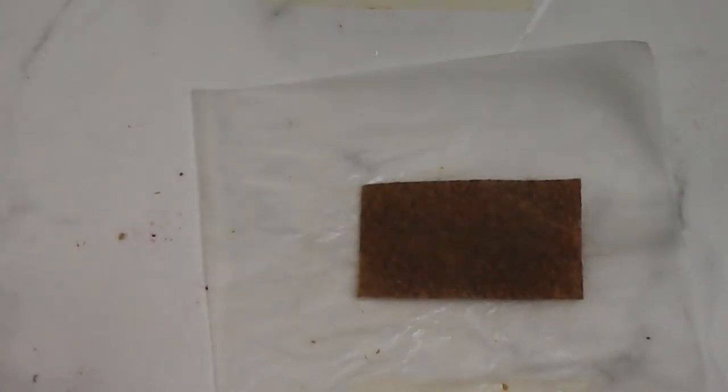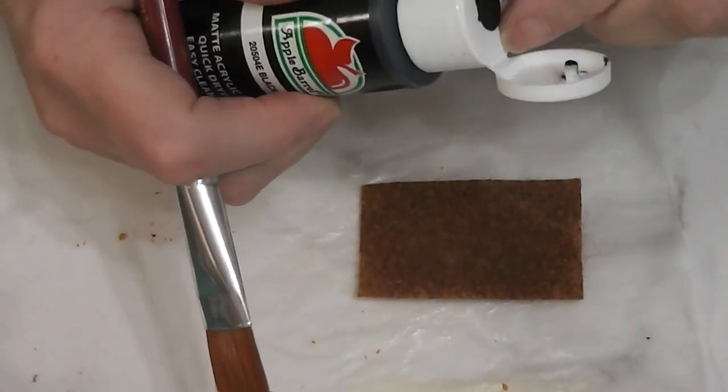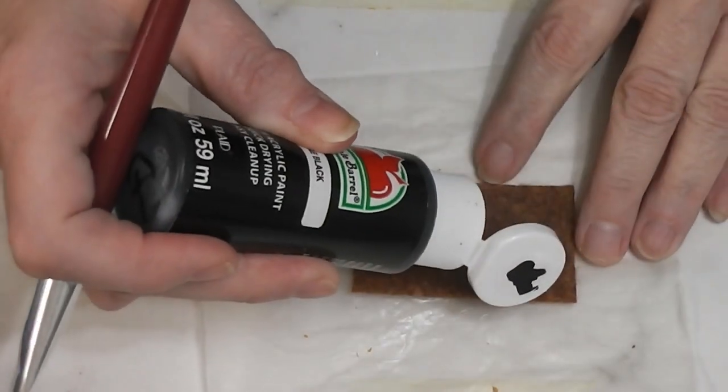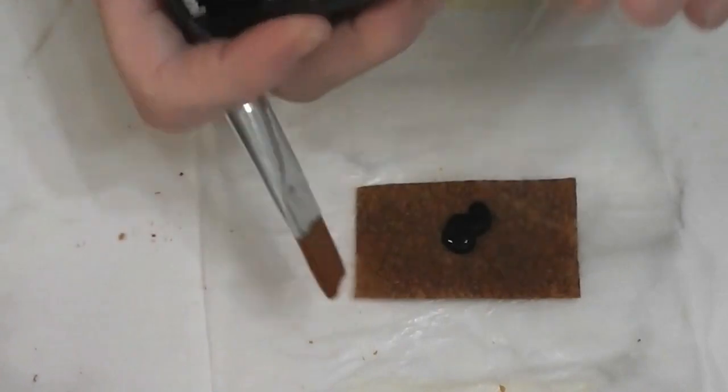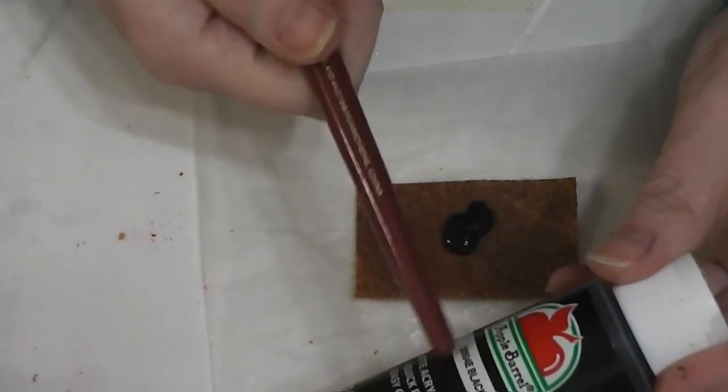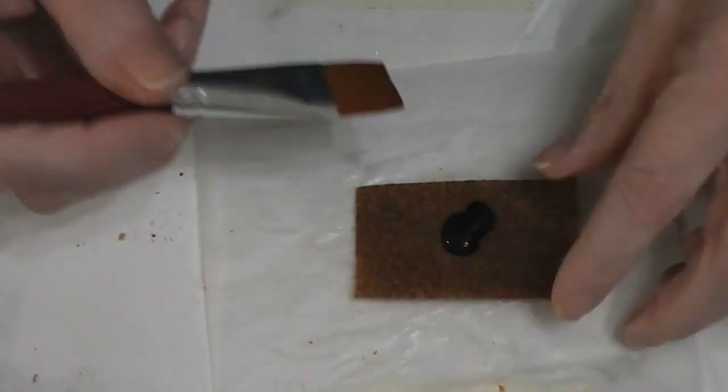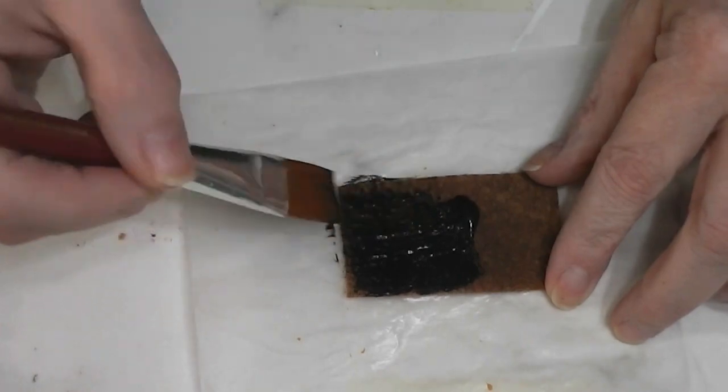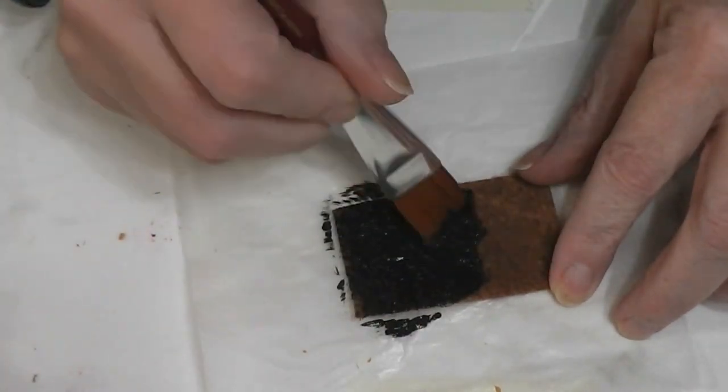Alright, the Mod Podge is dry and for this particular doormat I am going to paint the top surface with black paint and I'm using the black that Plaid sent me. I love, I'm really falling in love with the Apple Barrel. It is really, really good quality and one of the brushes they sent me.